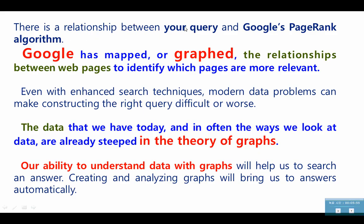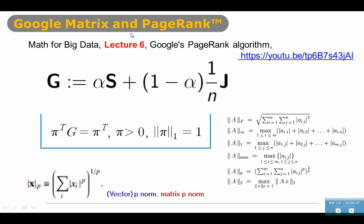Google search results are typically better and faster because their algorithms make the most of the connections between pages. Google's PageRank algorithm can be analyzed through a graph theoretical lens. Big data has very lucrative information in networks. It brings to light a very necessary prerequisite in understanding and analyzing networks: understanding graphs. There is a relationship between your query and Google's PageRank algorithm. Google has mapped or graphed the relationship between the web pages to identify which pages are more relevant. The data that we have today, and often the ways we look at data, are already steeped in the theory of graphs. Our ability to understand data with graphs will help us to search an answer.